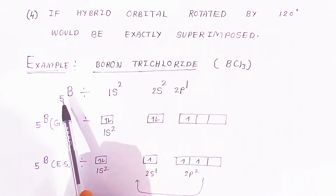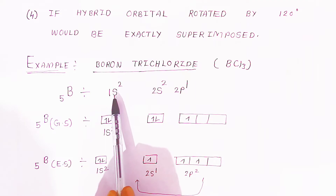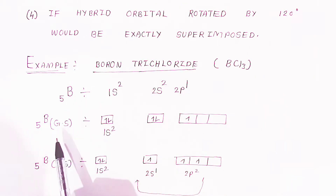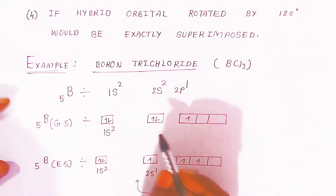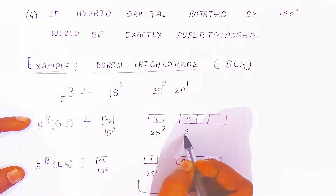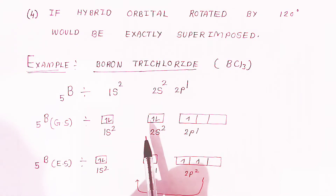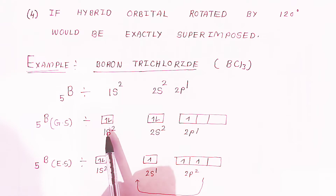Boron has atomic number 5. Its electronic configuration will be 1s2, 2s2, 2p1. When you see the ground state electronic configuration of boron with atomic number 5, it will be 1s2, 2s2, and 2p1. In the block diagram, the 2s2 and 2p orbitals will participate in the bonding, while 1s2 are the non-bonding orbitals.